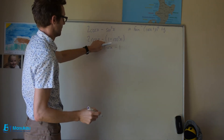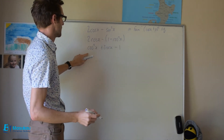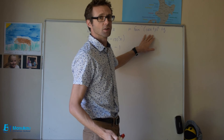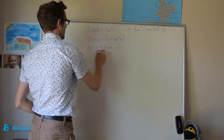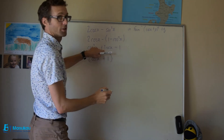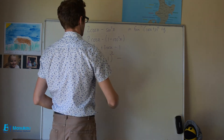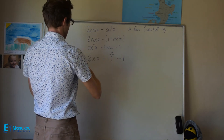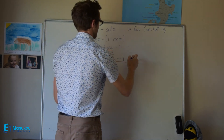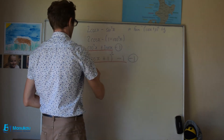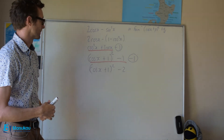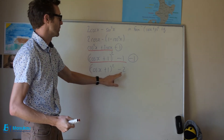At this point you should be thinking — this rings a bell. This is completing the square. To complete the square for this expression, we're going to write cosine x plus 1 — half of the coefficient of cosine x — all squared, subtract 1, so that part is equivalent to cosine squared x plus 2 cosine x. Then we also have a minus 1 to stick on the end, giving us cosine x plus 1, all squared, minus 2. So therefore p equals 1 and q equals minus 2.